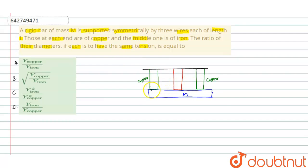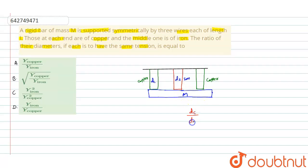We have to calculate the ratio of the diameters. Suppose the diameter of the copper wire is d-c and the diameter of the iron wire is d-i. We have to calculate the ratio of diameters copper to iron.